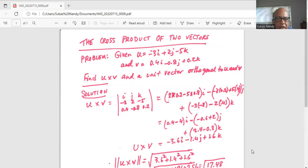So it will be minus 2 times 0.2 is 0.4 minus 5 times 0.8 is 4. So 0.4 minus 4 for i. For j it will be minus 3 times 0.2 is minus 0.6 plus 5 times 0.4 is 2.